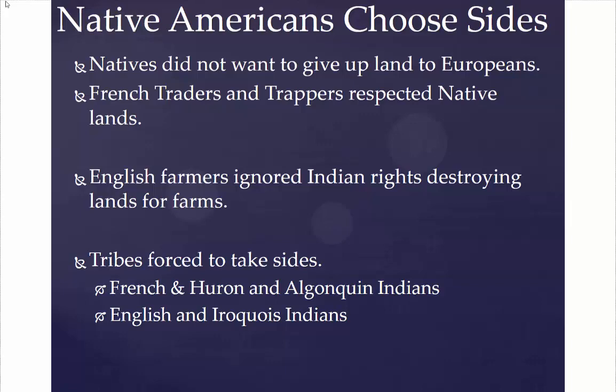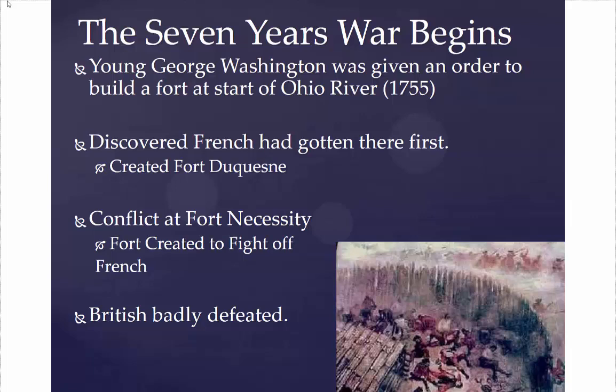These tribes were going to be forced to take sides in this conflict. The French would team up with the Huron and the Algonquin Indians, while the British would team up with the Iroquois, who had been enemies of the Huron and Algonquin — which is why they would side with the British. The Seven Years' War begins when a young George Washington is given an order to build a fort at the start of the Ohio River in 1755. When he arrives, he discovers the French had gotten there first and created Fort Duquesne.